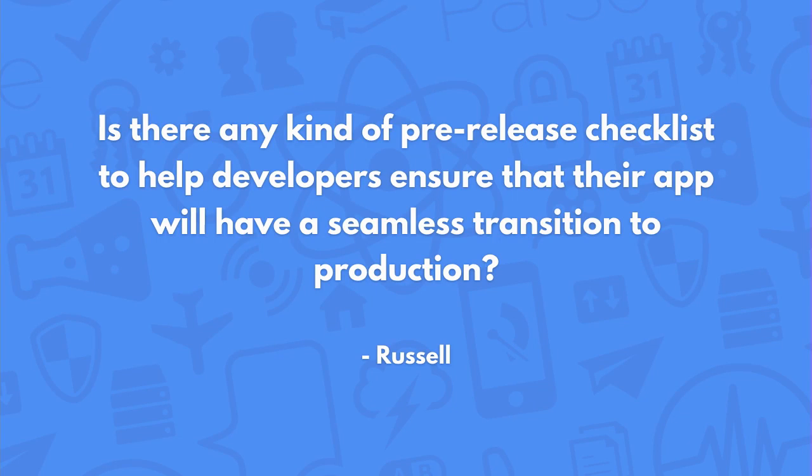Is there any kind of pre-release checklist to help developers ensure that their app will have a seamless transition to production? When you switch your app from dev to prod, nothing happens on our end. However, when you do consider or launch your application to the App Store or put it out there even for testing, you want to consider a couple of things. One of those is to check and make sure that your objects all have ACLs, and if not, apply something like one of our class level permissions. There's a lot of other small things you should consider and you can check out the security guide to get a better idea for all of this.